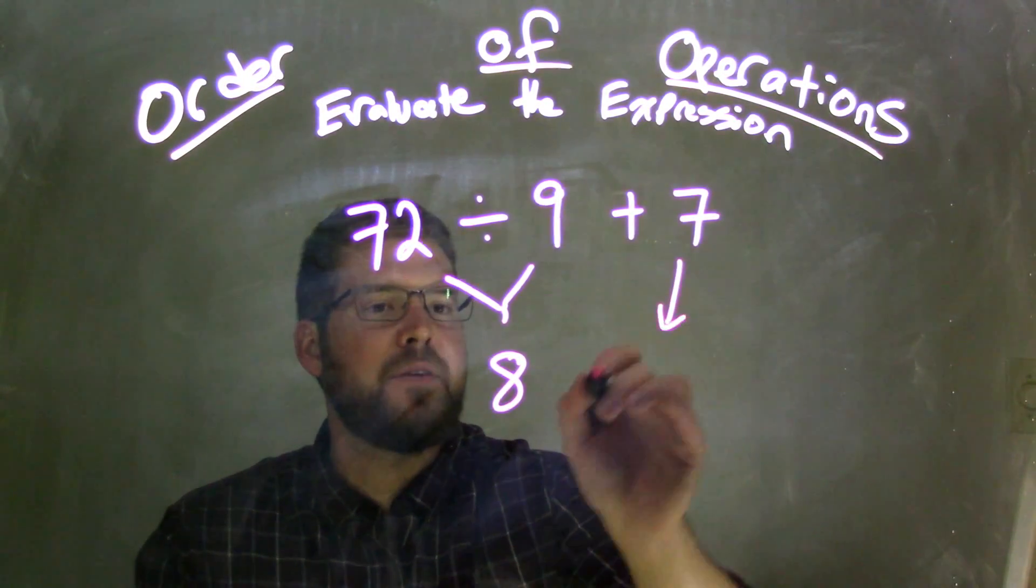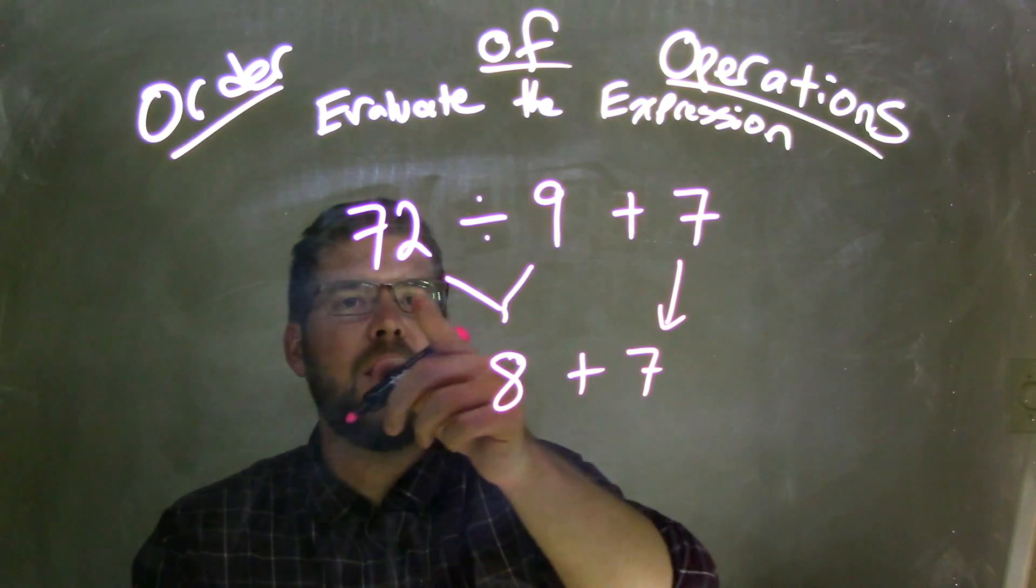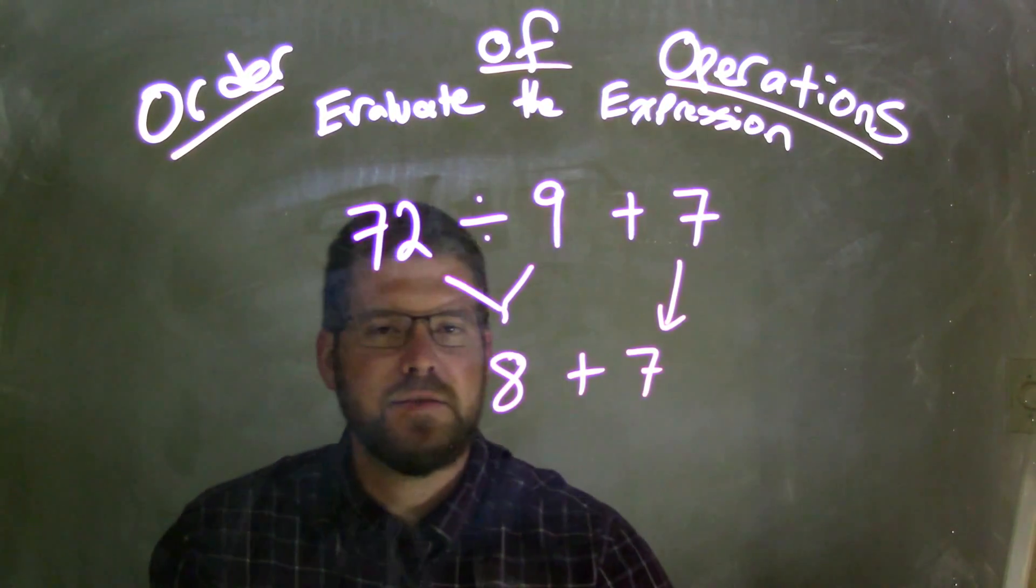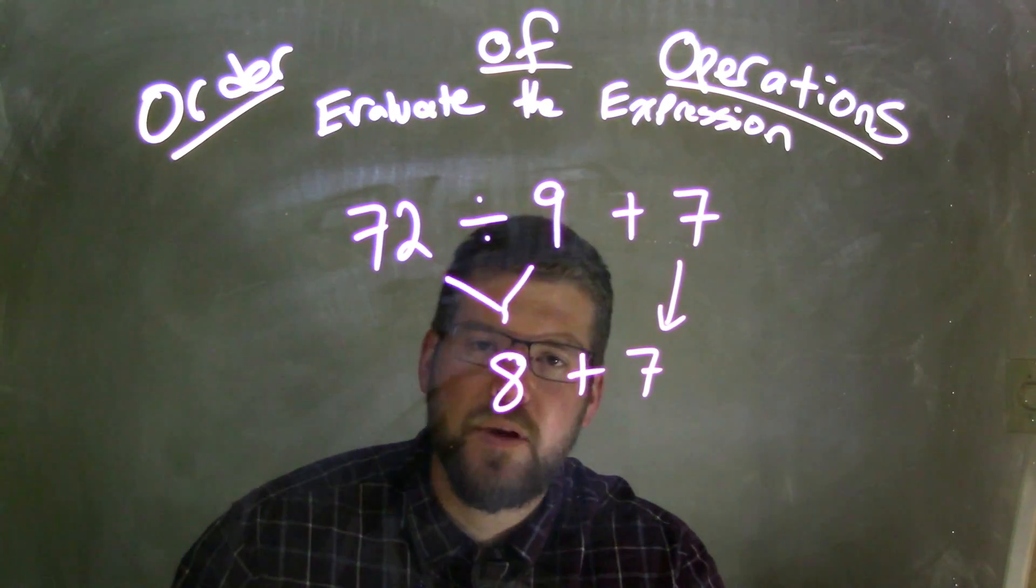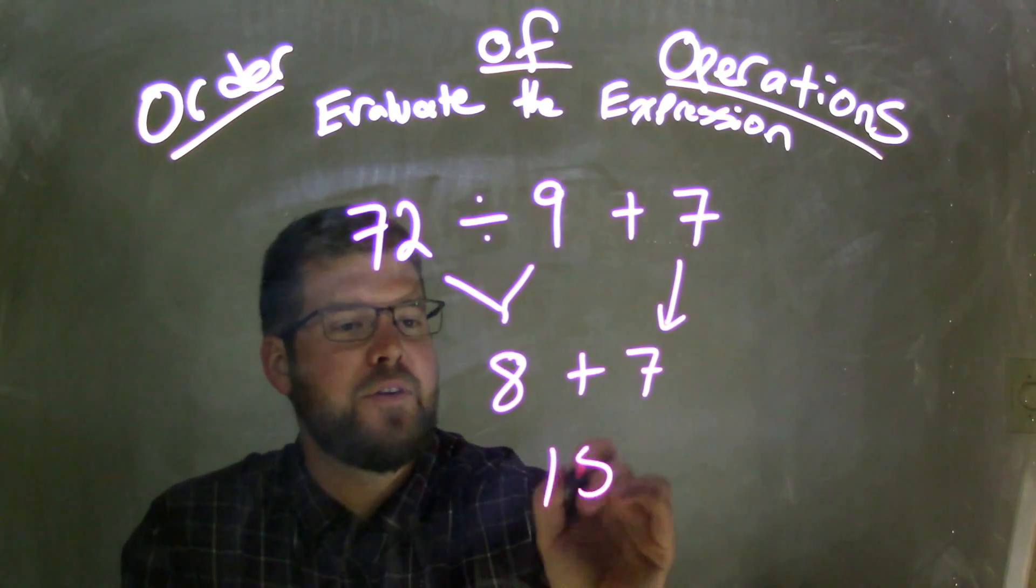Then we bring down the plus 7. So 72 divided by 9 is 8, and then we bring down the 7, so 8 plus 7 comes out to be 15.